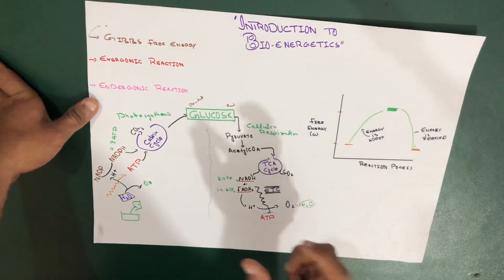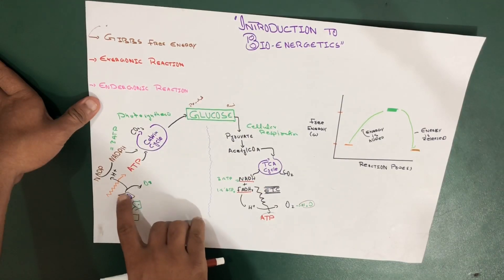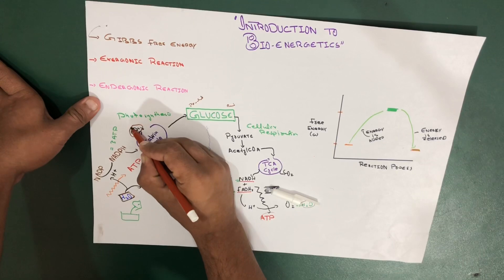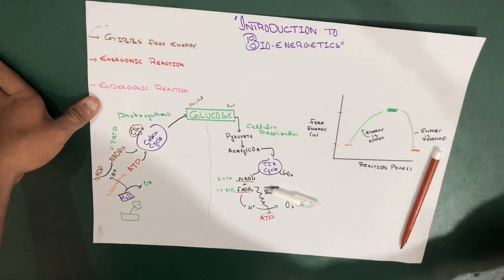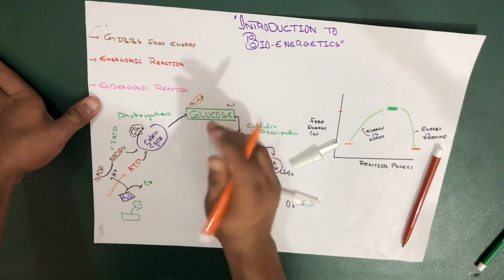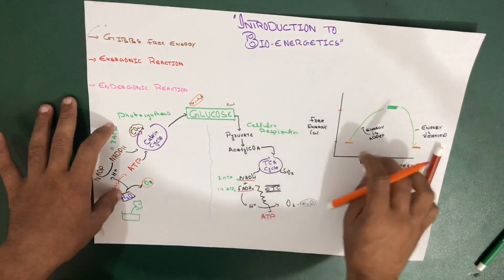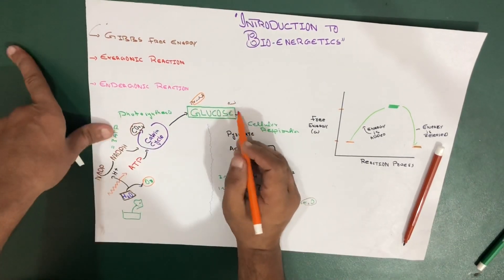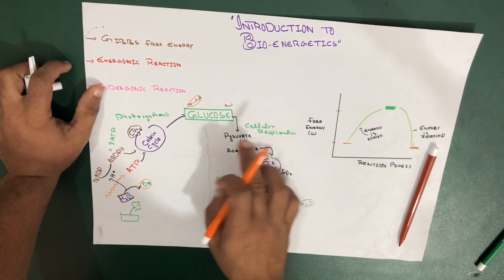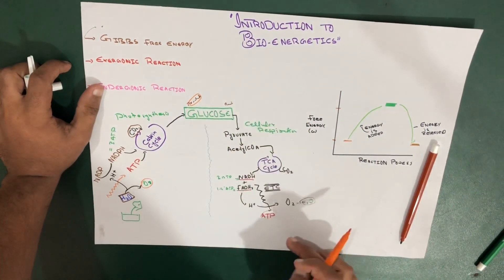There are a few reactants and products to compare. In photosynthesis, water is a reactant and carbon dioxide is also a reactant. The products are glucose and oxygen. In cellular respiration, glucose — which was a product in photosynthesis — now acts as a reactant. So what is a product in photosynthesis acts as a reactant in cellular respiration.